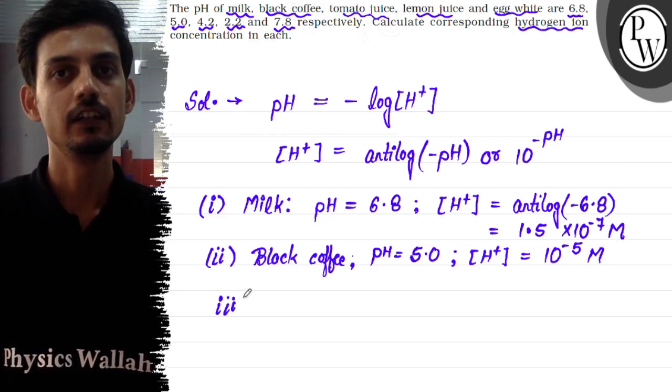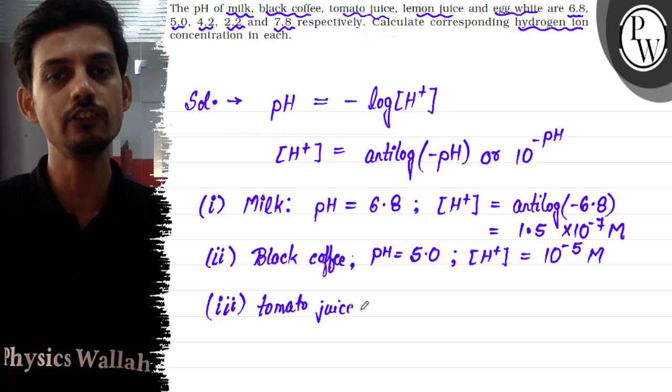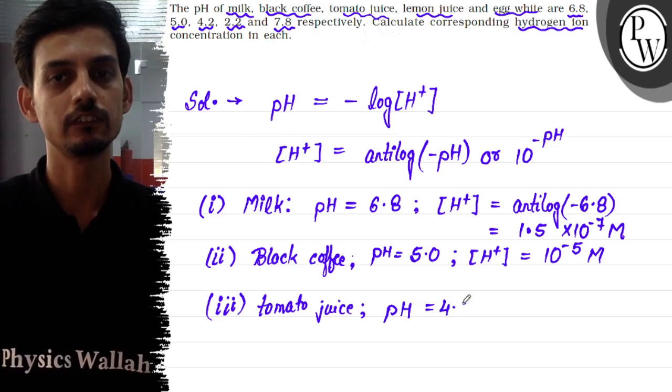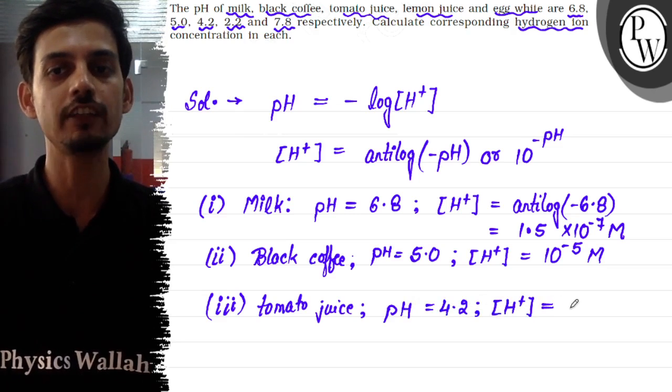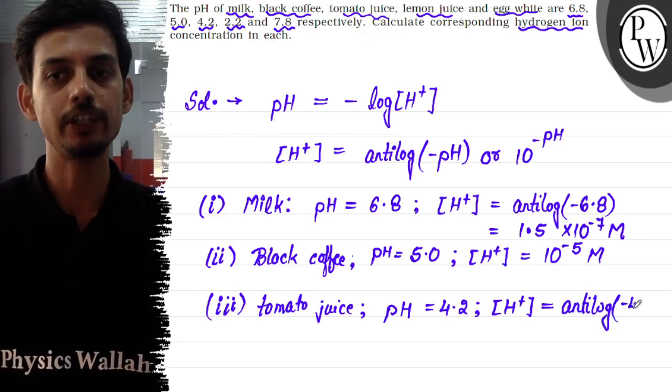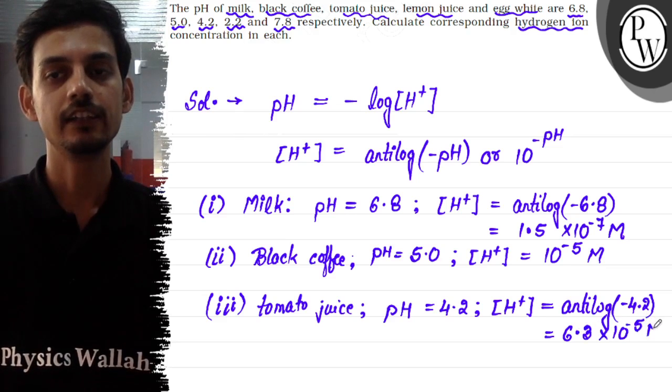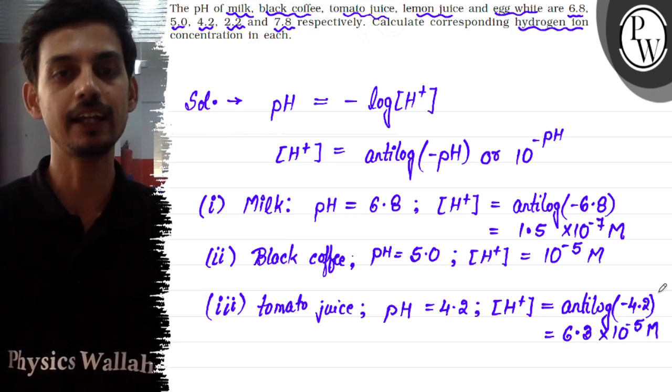Now the third part is tomato juice, and its pH is given as 4.2. So the concentration of H+ ion will be - here for the fractional value, we have to check the antilog value. Antilog of minus 4.2, and this will become approximately 6.3 × 10^(-5) moles per liter. This is the concentration of H+ ion in tomato juice.